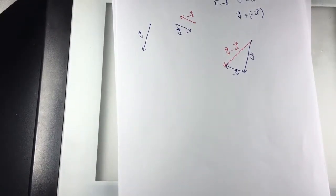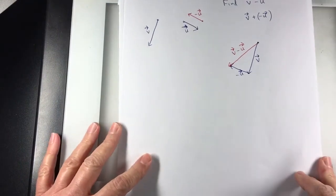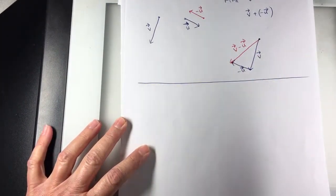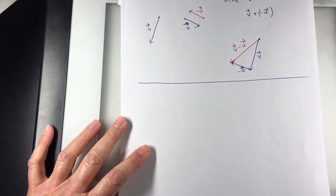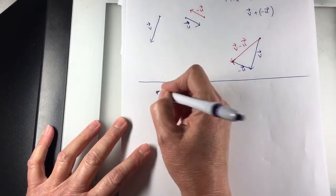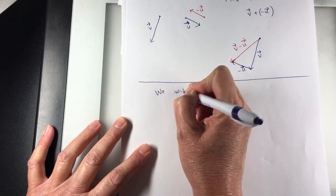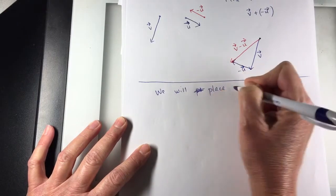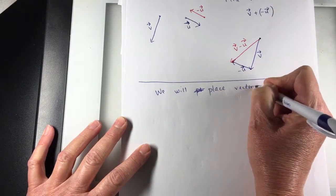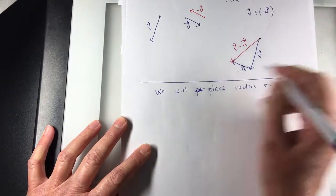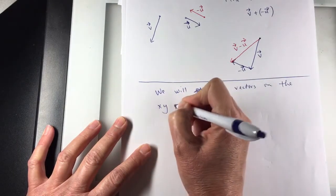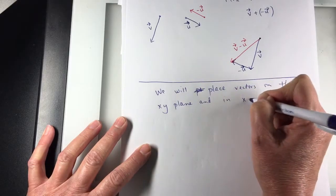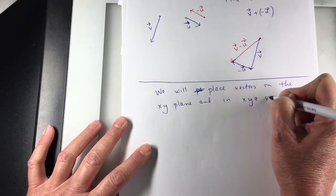We're going to take the vectors and put them on the x,y plane or the x,y,z space. I guess that's not a plane, that's space. We will place vectors on the x,y plane and in x,y,z space.